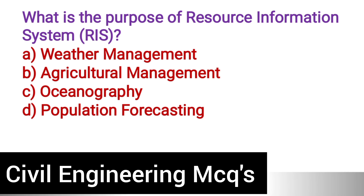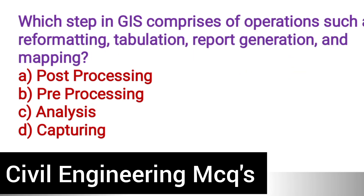Next question: What is the purpose of a resource information system? Option A: Weather management. Option B: Agriculture management. Option C: Oceanography. Option D: Population forecasting. The correct answer is option B, agriculture management.